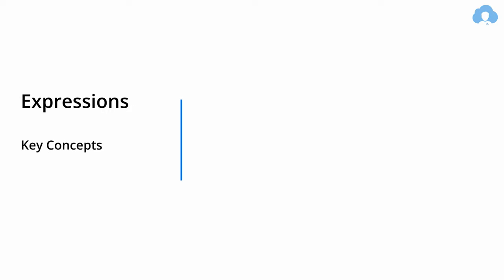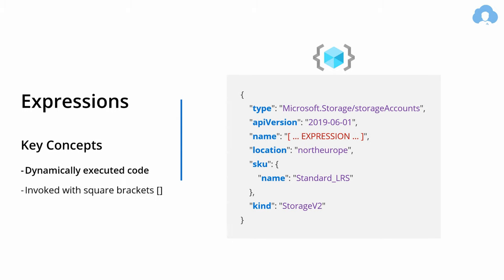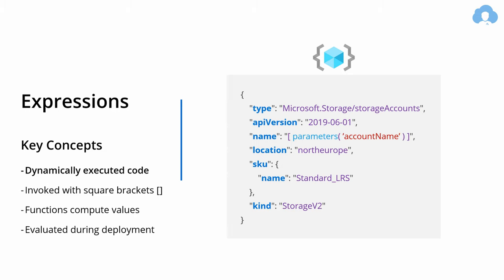Let's talk expressions first. If you have a template that deploys a storage account, you can use an expression to parametrize that template. In simple terms, an expression is just dynamically executed code which you invoke using square brackets, and within those square brackets you can use functions. There are a lot of functions you can use within ARM templates, and their general purpose is to calculate dynamic values. These functions are evaluated during the deployment and will always compute a value that gets replaced in the template.